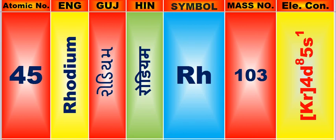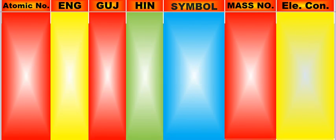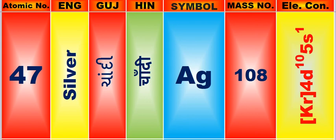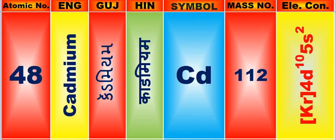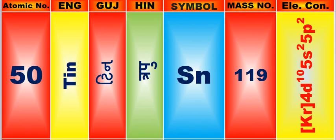Atomic number is 45, name of atom is Rhodium. Atomic number is 46, name of atom is Palladium. Atomic number is 47, name of atom is Silver. Atomic number is 48, name of atom is Cadmium. Atomic number is 49, name of atom is Indium. Atomic number is 50, name of atom is Tin.